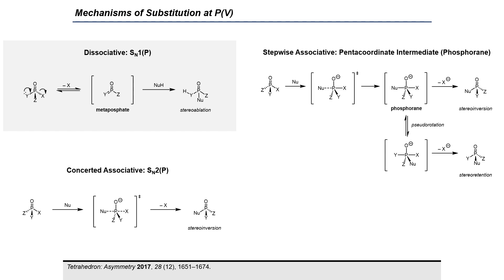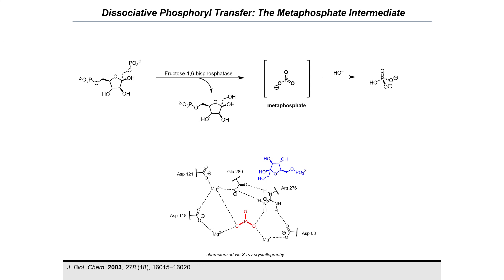Because this planar trivalent intermediate is formed, this mechanism typically results in loss of stereochemical information at phosphorus. Therefore, this is a stereoablative process. The viability of metaphosphates as intermediates in phosphorylation reactions was affirmed biochemically when a metaphosphate was directly observed in the active site of fructose 1,6-bisphosphatase at high pH. While the crystal structure obtained does not constitute definitive evidence that the mechanism proceeds through a dissociative SN1 type mechanism, the study demonstrates that this enzyme is capable of stabilizing metaphosphate, supporting their existence as intermediates in enzymatic phosphoryl transfer pathways.